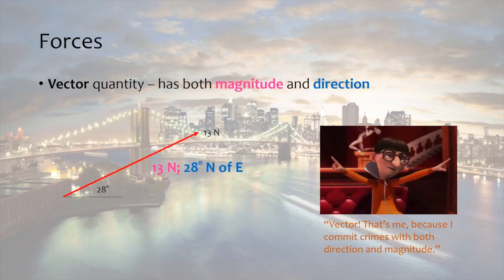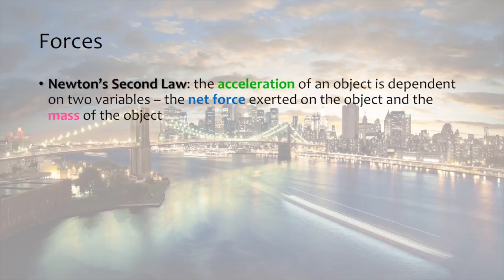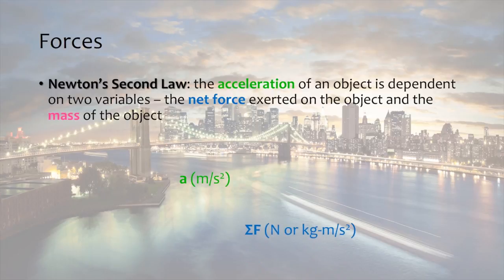So how do we relate forces to structural design? This is where Newton's second law comes into the picture. Newton's second law states that the acceleration of an object is dependent on two variables: the net force exerted on the object and the mass of the object. Acceleration has units of meters per second squared, mass has units of kilograms, and force has units of newtons, which can also be written as kilogram meters per second squared.